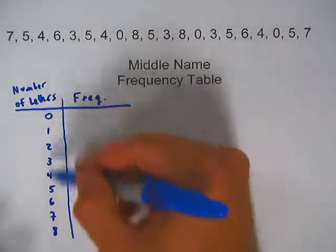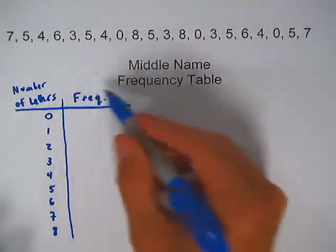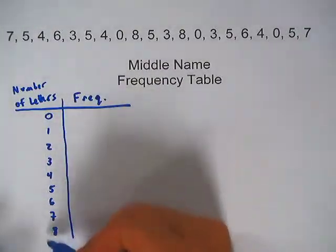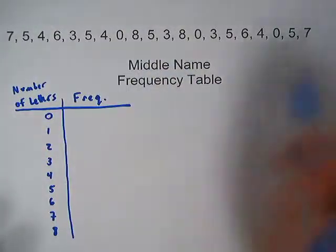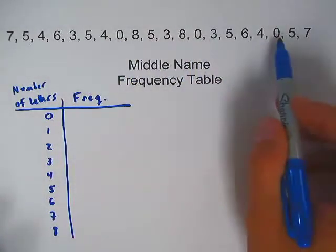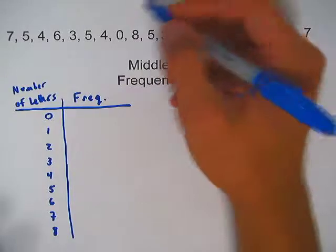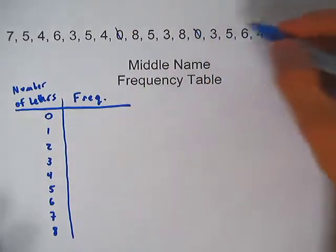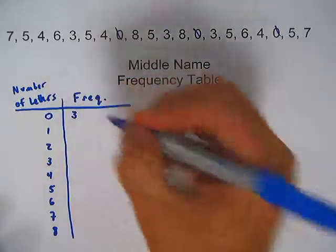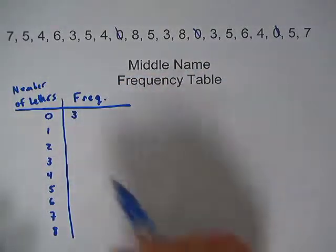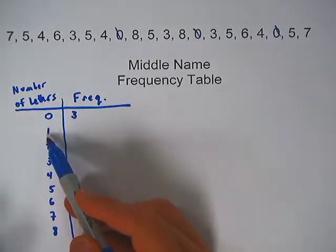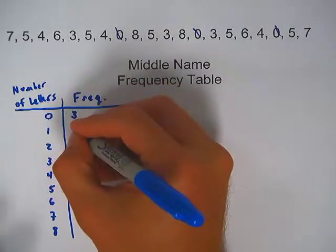And then next to each of these numbers I'm going to figure out what the frequency is. So how many times did these data values show up in the data set? Let's start with 0. So I have 3 people that had middle names of 0 letters or didn't have a middle name. And then I'm just going to cross those off so I don't confuse those later. So in this column I'm going to put a 3 next to the 0. Now if I look at 1, there's nobody with a middle name of 1 letter. So that's going to be 0.